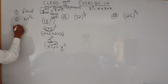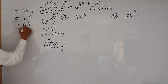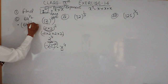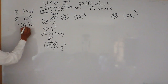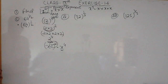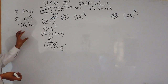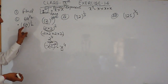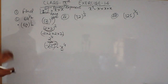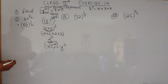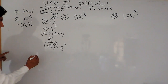Now, this is 64 raised to power 1 by 2. First of all, you have to write 64 as some base with some power — meaning you have to convert this into 2 raised to power something. For that, what you can do is factorize this 64.